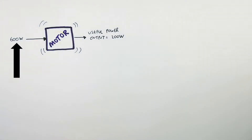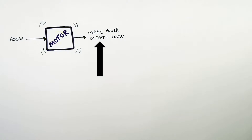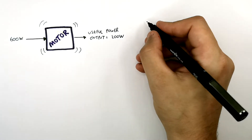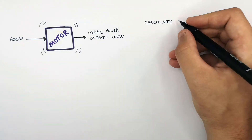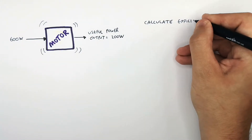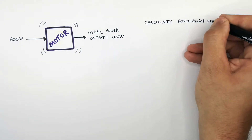So you've got the total power input, which is 600 watts, and you've got the useful power output, which is 200 watts. So we can use this information to calculate the efficiency of the motor.